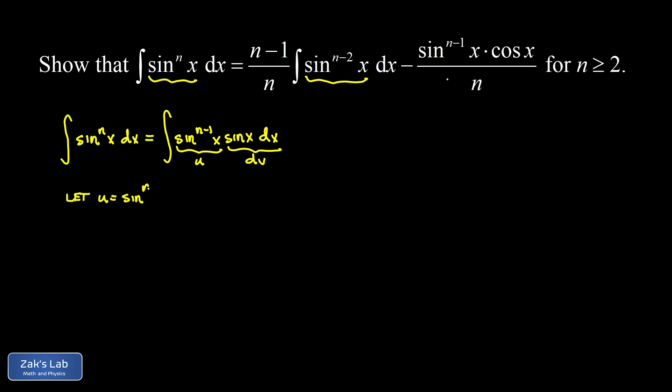We're going to let u equal sine to the n minus 1st power of x. That means du requires the chain rule here. To get du, I have to differentiate with respect to the sine function. That gives me n minus 1 sine to the n minus 2 of x times the derivative of sine x, which is cosine x, and there's dx on there. Now dv is the other piece, that's sine x dx. And that means v is going to be negative cosine x.